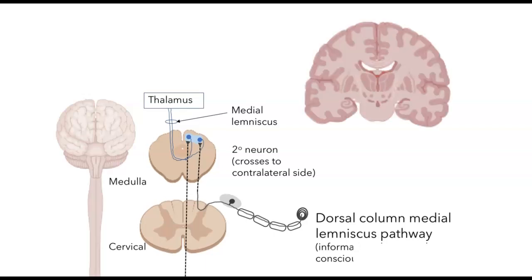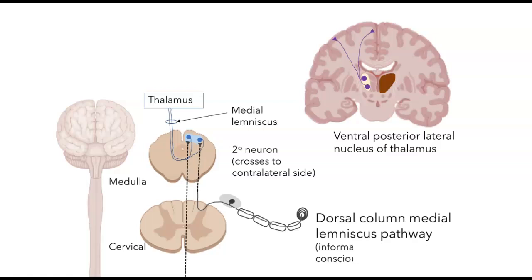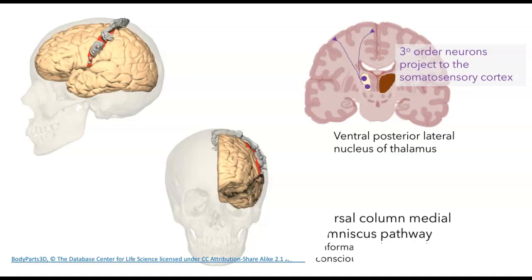From the thalamus, somatosensory information synapses on a specific region called the ventral posterior lateral nucleus. Third-order neurons from there project up to the somatosensory cortex. Importantly, the spatial organization established when neurons entered the spinal cord is preserved in the medulla, in the projections to the thalamus, and ultimately at the somatosensory cortex, where lower structures lie close to the midline and more rostral structures like the arms and face lie more laterally.